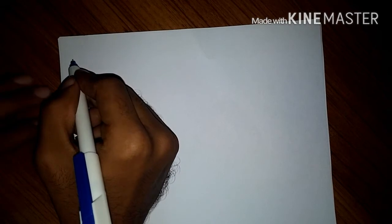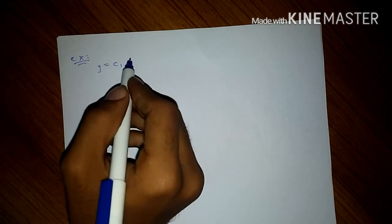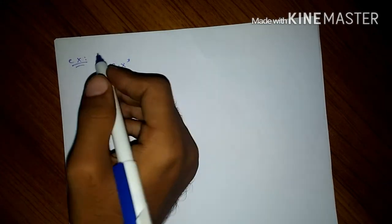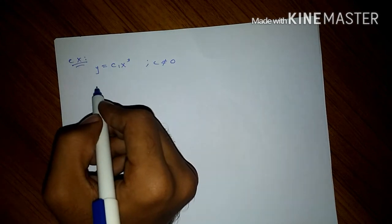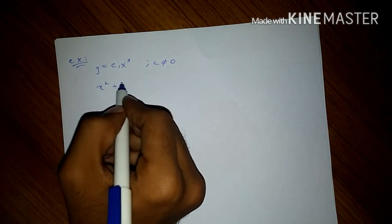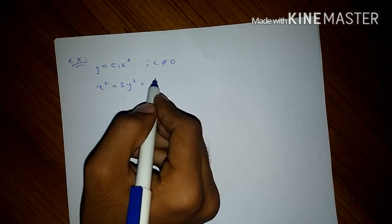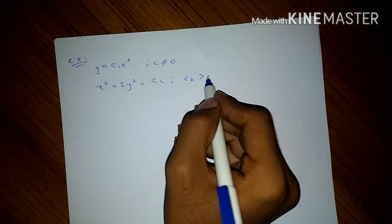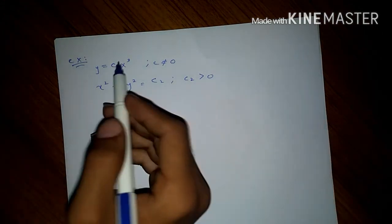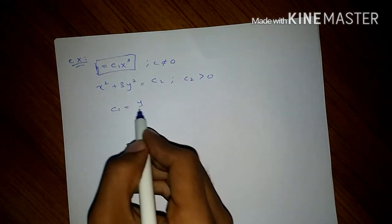Let's have a look at another example. We have y = c1 times x³ where c1 is not equal to 0, and x² + 3y² = c2 where c2 is greater than 0. From here we get our value of c1, that is y upon x³.